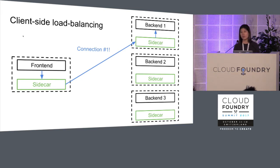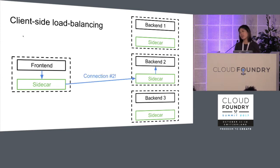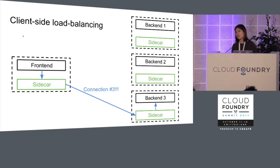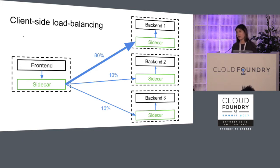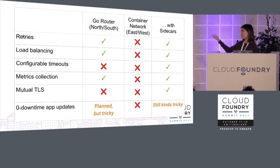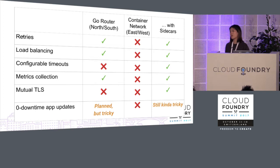For client-side load balancing: when a front end wants to talk to multiple back-end instances, it sends traffic through the sidecar, which does round-robin load balancing — connection one, two, three. You can get even fancier: tell the sidecar to send 80% of traffic to instance one and 10% to each of the others. Looking back at all the features microservices need, sidecars provide everything the Go Router and container networking currently offer, plus features they don't — for both north-south and east-west traffic.